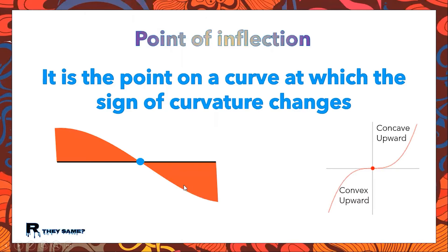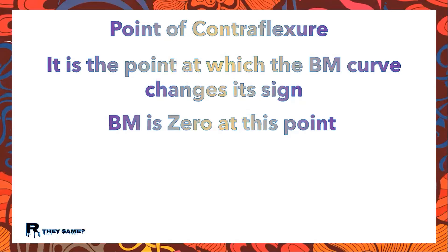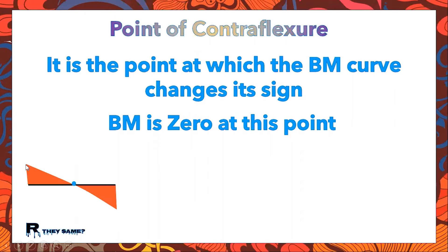Now, what is the point of contraflexure? It is the point at which the bending moment changes its sign — the bending moment is zero at this point. In this figure, the bending moment is a straight line from positive to negative, changing gradually to zero and then becoming negative. The blue dot, at which the bending moment becomes zero and changes its sign from positive to negative (or vice versa), is called the point of contraflexure. Even in the case where the bending moment decreases gradually, becomes zero, and goes negative with the same curvature, that point is also called a point of contraflexure.